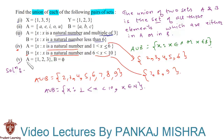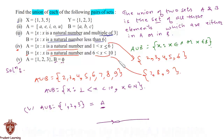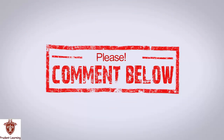In the last section, set A consists of elements {1, 2, 3} and B is an empty set. Their union is nothing but set A itself, so A union B is equal to {1, 2, 3}. This is set A itself because the union of an empty set and a non-empty set is the non-empty set itself. This completes our solution.